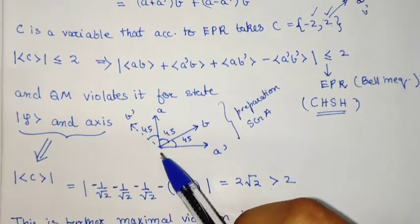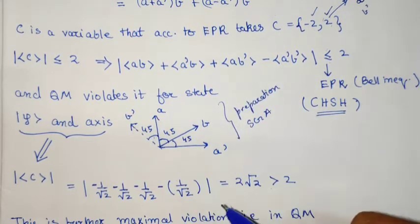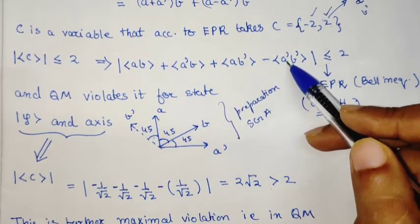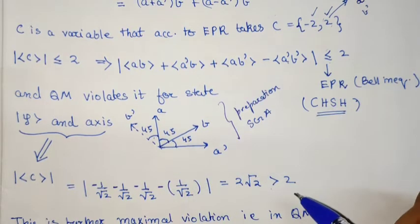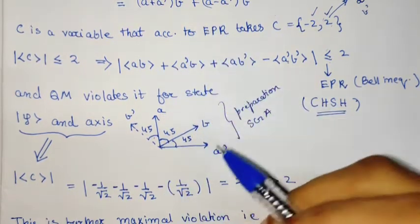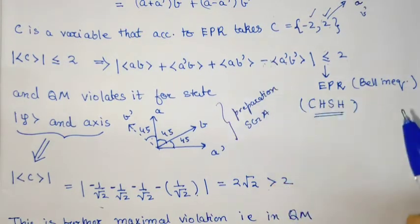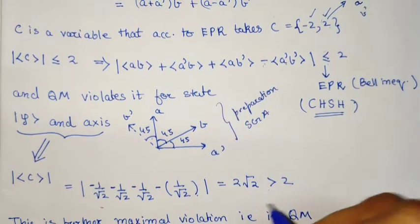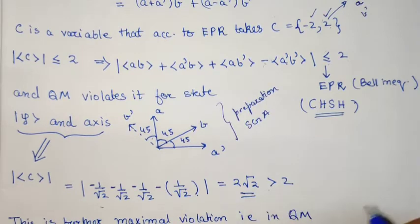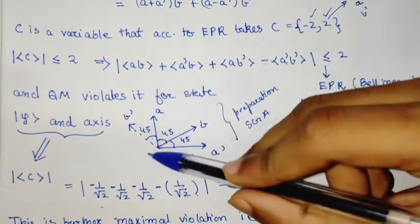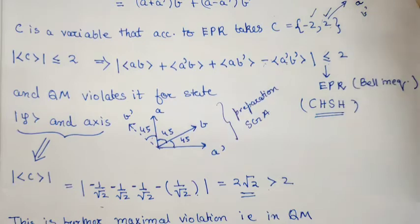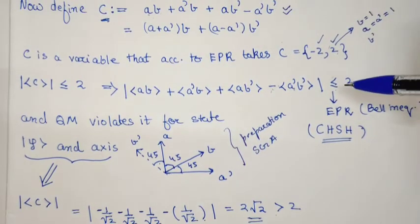Using -cos of these angles with the minus sign, this gives us a value of 2√2. For this particular preparation, we get a value greater than what EPR predicts, so EPR is violated. By performing experiments, we can confirm this.